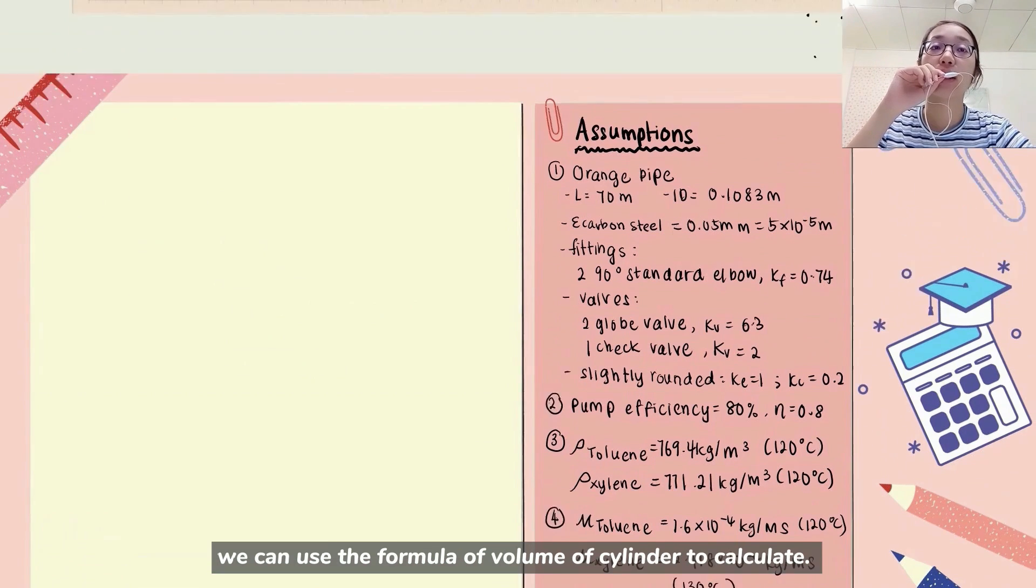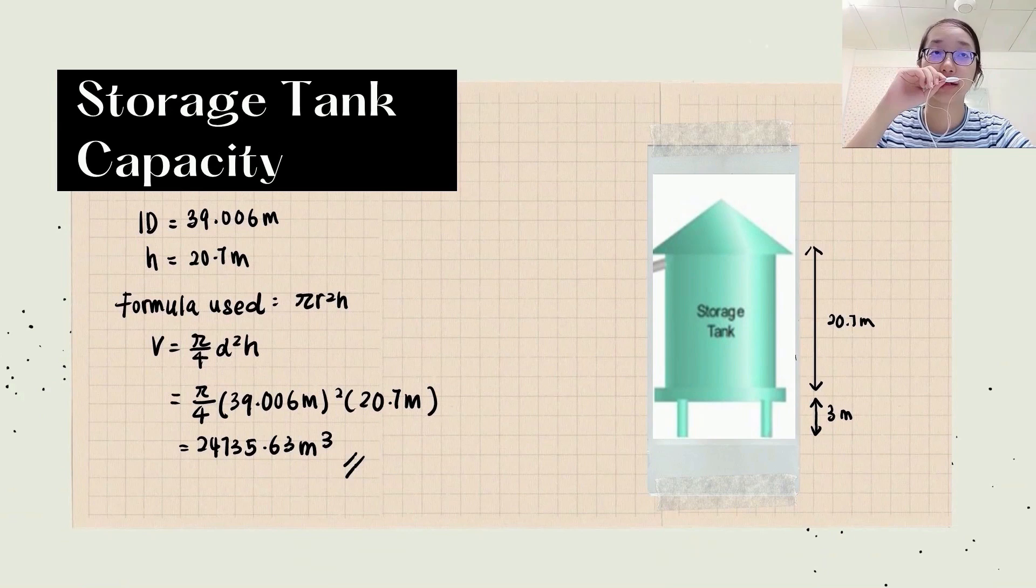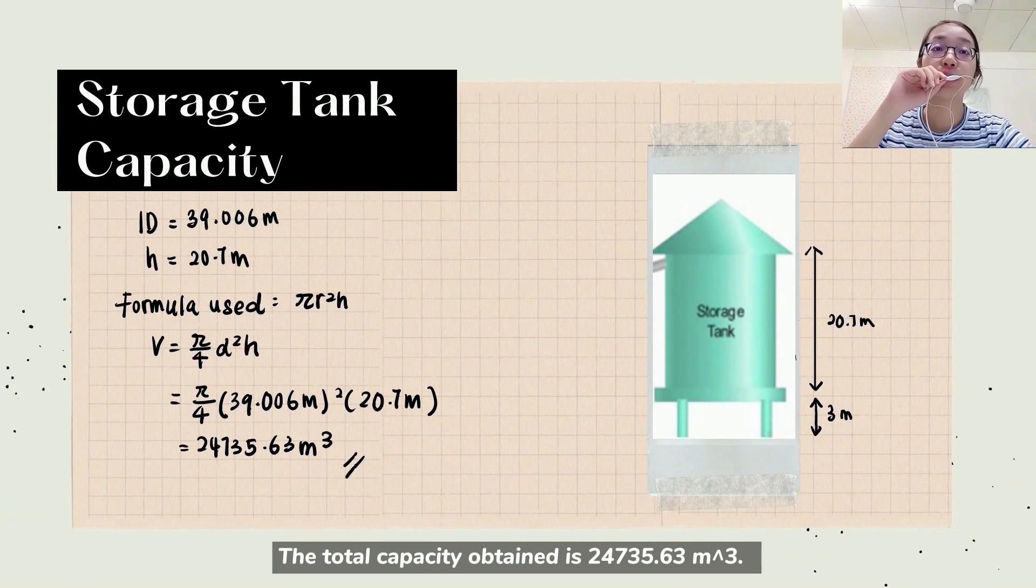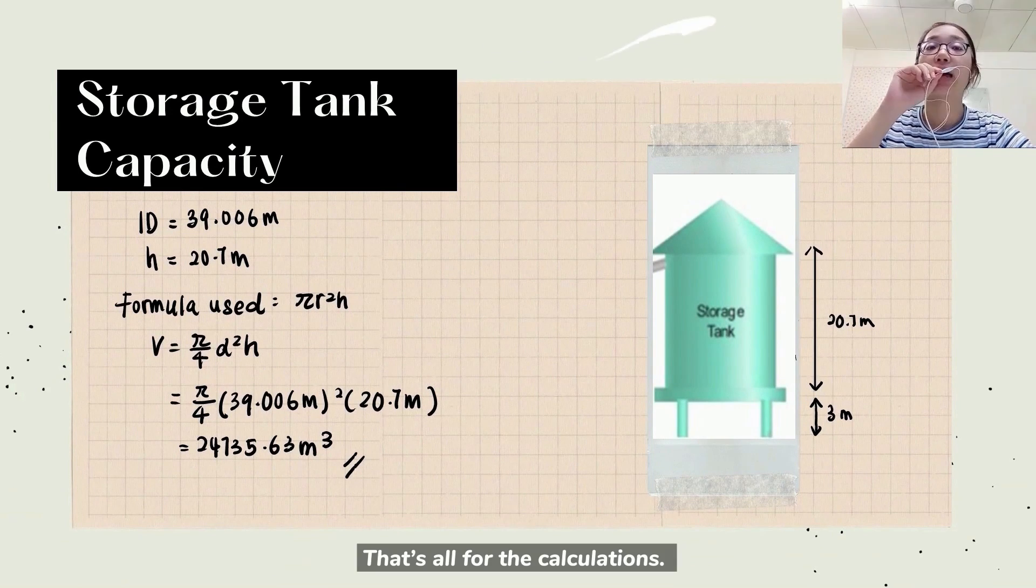As for the capacity of storage tank, we can use the formula of volume of cylinder to calculate. The total capacity obtained is 24735.63 cubic meters. That's all for the calculation.